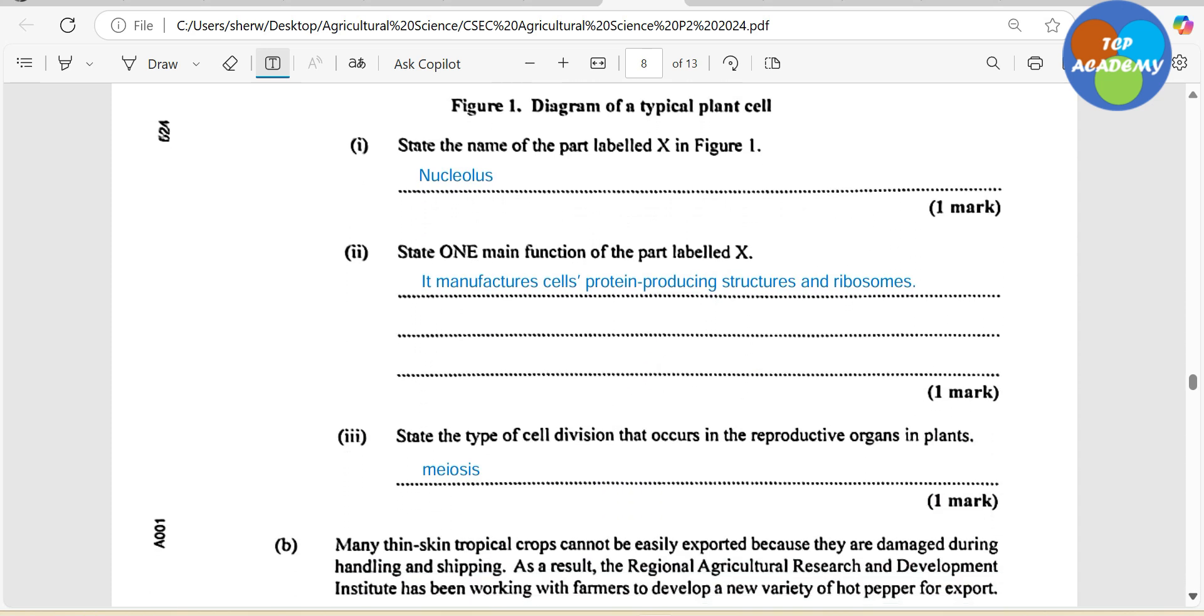Let's look at the other question. State the type of cell division that occurs in the reproductive organ in plants. Now remember there are two types of cell division. Cell division is going to be taking place either by mitosis or meiosis. When it's mitosis, we're going to have the exact number of chromosomes being transferred to the offspring from the parent. And in so doing, this mitosis takes place in what we refer to as somatic cells, that's regular body cells. The other type of cell division which pretty much passes half the chromosome number is called meiosis. And this only takes place in the reproductive cells. So here your answer is going to be meiosis.